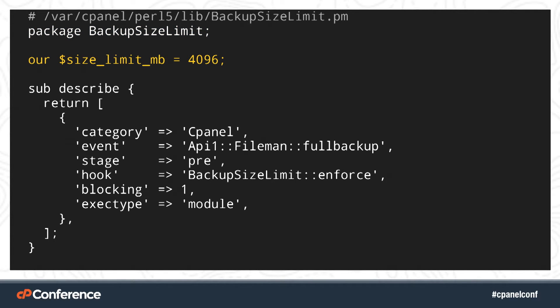I define my size limit as 4GB, which seems reasonable — depending on the speed of your hard disks, your mileage may vary. Hook modules must have a describe method. Hook scripts don't have to have one, but they make administering hooks a lot easier and are absolutely worth the effort. The category, event, and stage values come from the debug hook output we got earlier. The hook value is the fully qualified name of the subroutine you want called when this hook point is reached. If you intend to prevent an API call from running, blocking has to be set to 1 — this only makes sense for pre-stage hooks, and you should set it to 0 unless you expect to need it. ExecType is module because this is a module; if you run it as an external script, it will be script instead. Those are the only possible values.